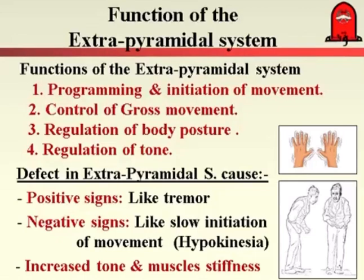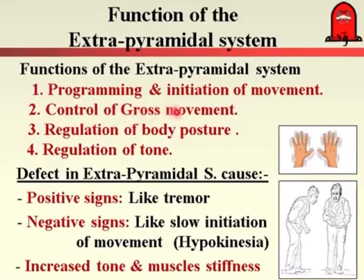What is the function of the extrapyramidal system? The pyramidal system is responsible for fine delicate movement. The extrapyramidal system is responsible for programming and initiation of movement, control of gross movement, regulation of body posture, and regulation of tone. If there is damage of the pyramidal system, we will still have the gross movement provided by the extrapyramidal system. This gross movement includes not only voluntary acts but also involuntary acts — that is, regulation of posture of the body and regulation of tone.